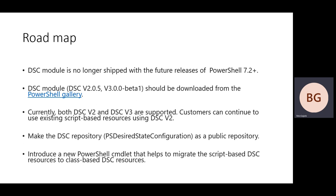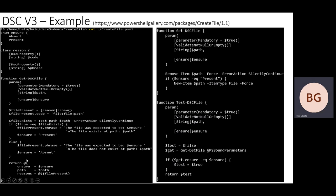Now let's go over an example to understand how to write a class-based resource. I have a simple, very basic PowerShell module which you can download from the PowerShell Gallery. The name of the module is CreateFile. The intent of CreateFile is to make sure there is a file present on the target machine; if not, it will create one. The core logic goes in PowerShell functions, which is similar to what script-based resources have — so there is no difference here, no additions at all.